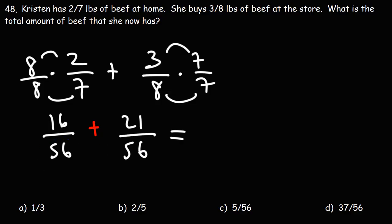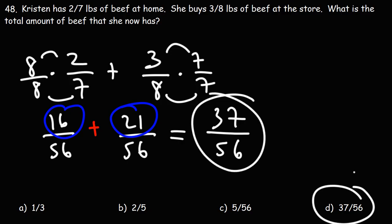So we can add 16 and 21, which will give us 37. This is the total amount of beef that she now has as a fraction: 37/56.